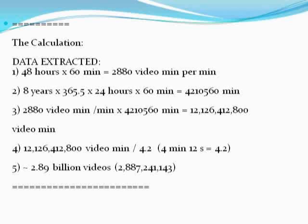We have the following sets of data that we can use to calculate. So 48 hours times 60 minutes will give you about 2,880 video minutes per minute. That means for every one minute that has passed, about 2,880 video minutes have gone by. Now YouTube has been around for about eight years, so we're going to multiply 8 years times 365.5 days times 24 hours times 60 minutes, which gives us approximately 4,210,560 minutes that have passed.